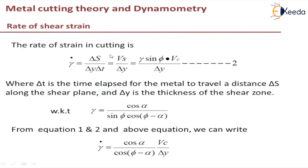So here you can see the rate of shear strain that is gamma dot that will be equal to delta S by delta y is a shear strain part. Again, we are dividing it with unit time because it is a rate of shear strain.